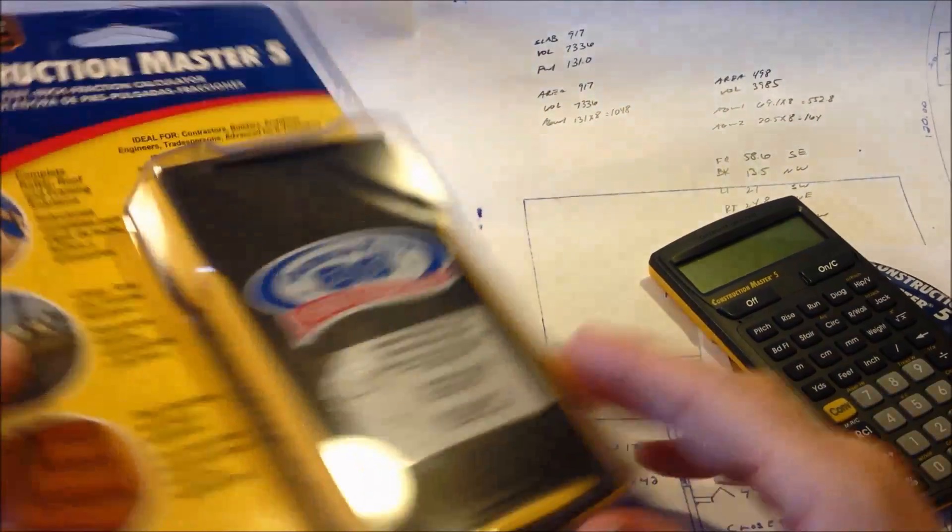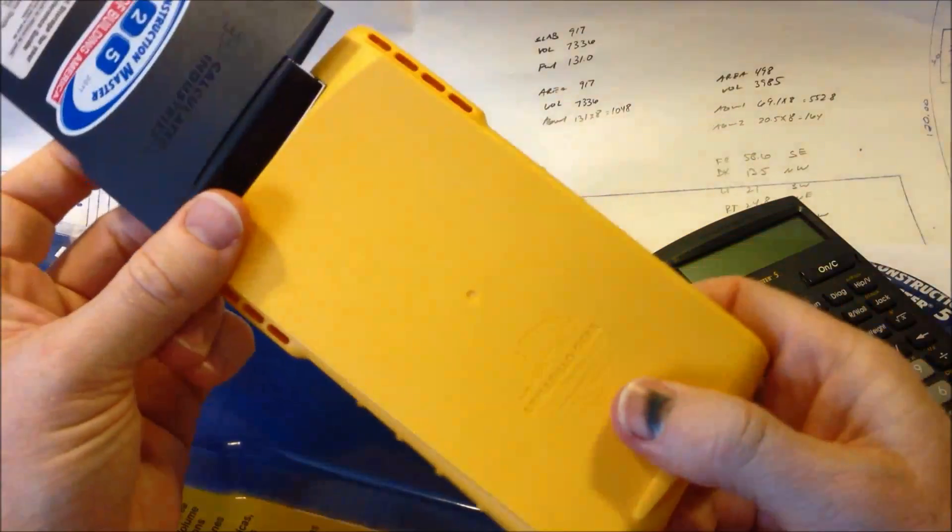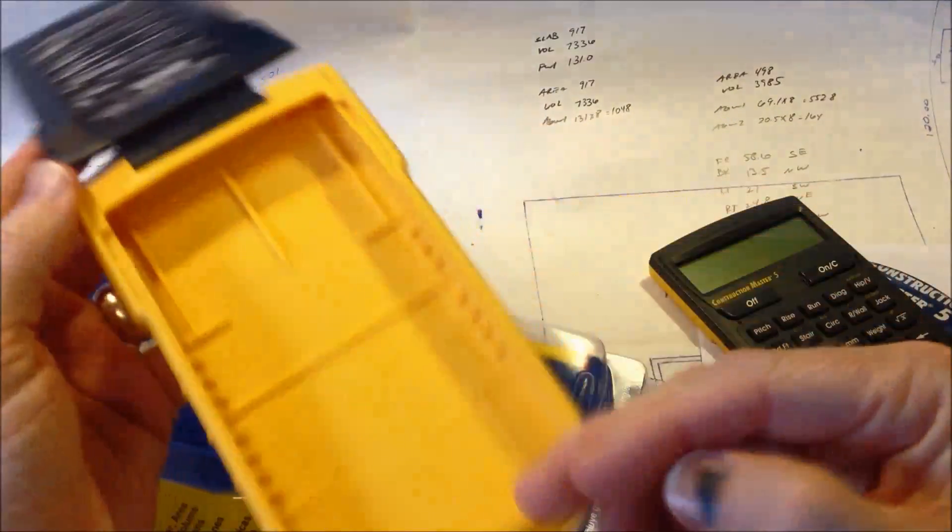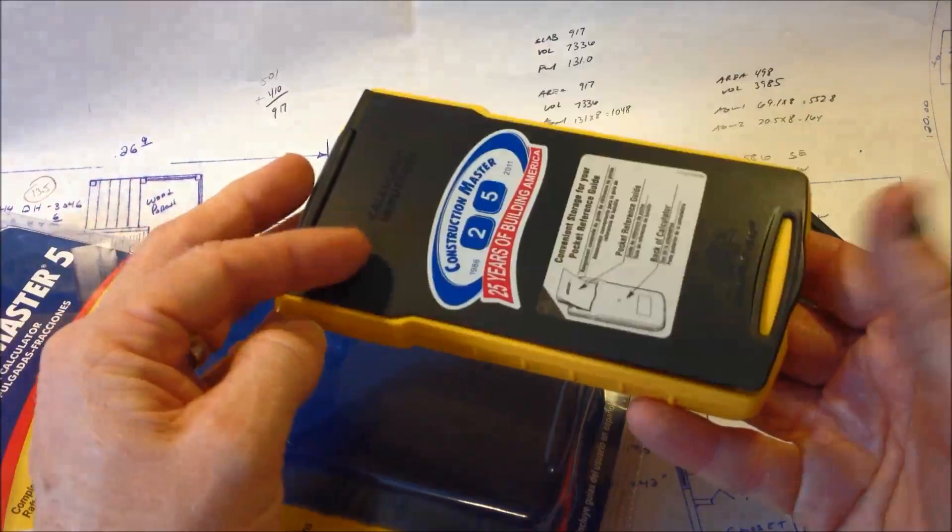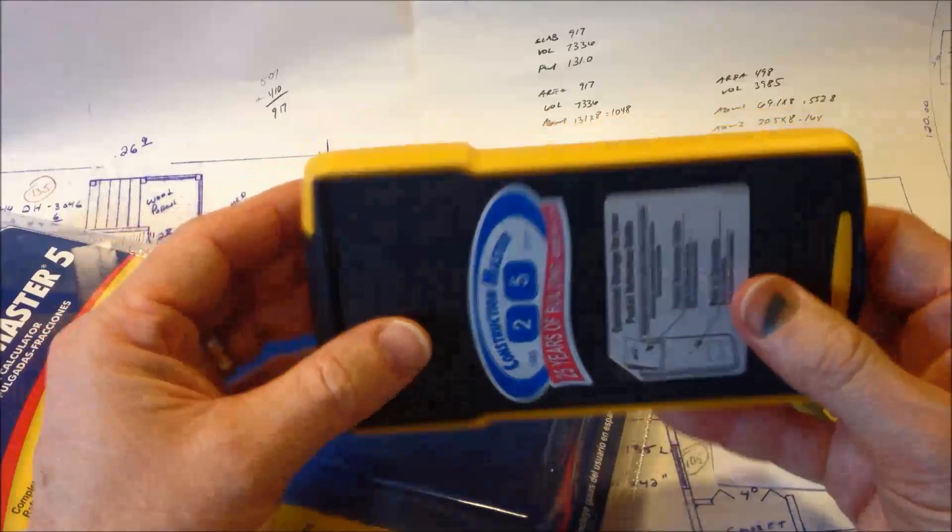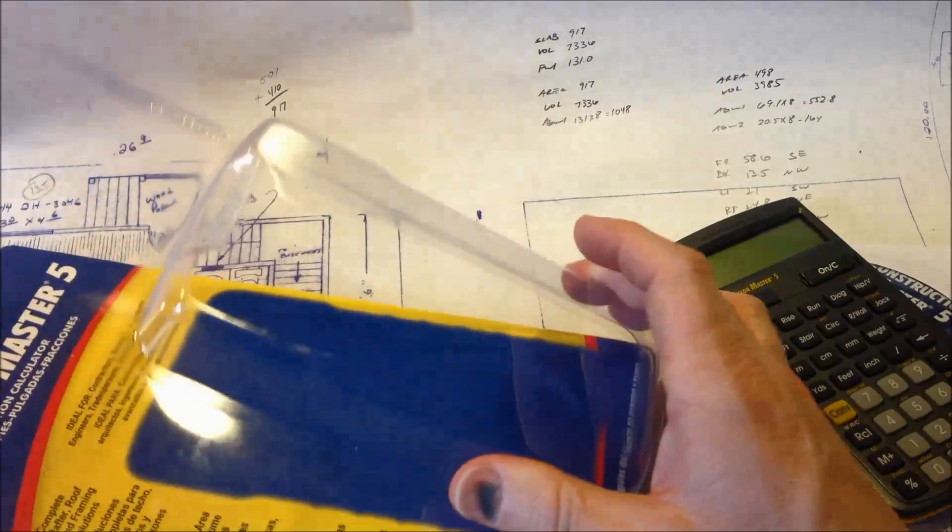The calculator comes in this blister pack with a case. If you want to take it out in the field, this is a tough rubber case from Armadillo Gear. The inside of the flip open lid has a little cheat sheet with some of the common functions you might run into in the field so you don't forget how to calculate things. I don't use this case because I do most of my work on blueprints, so we'll set that aside.